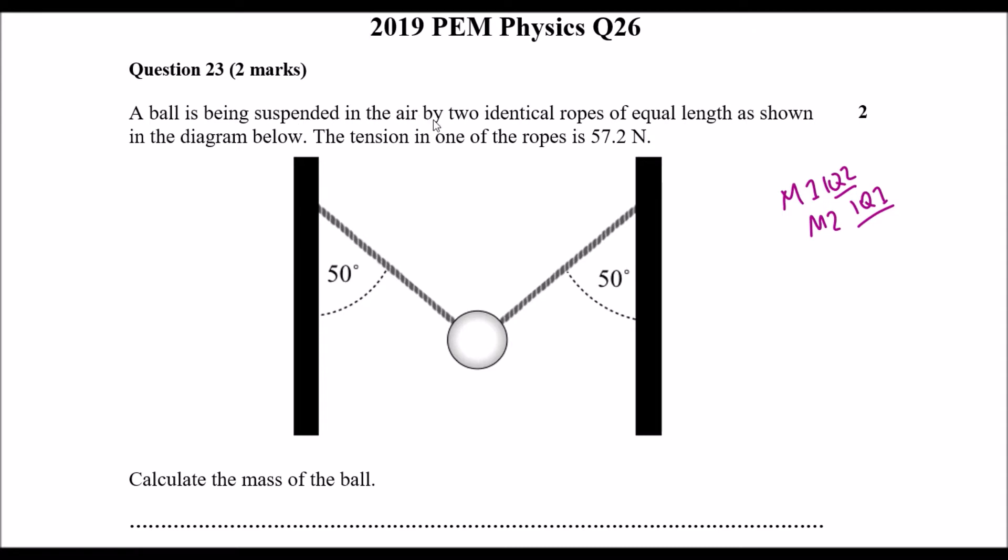It says we have a ball suspended in the air by two identical ropes of equal length as shown in the diagram below. The tension in the ropes is 57.2 N. So 57.2 here, 57.2 here. It says calculate the mass of the ball. So we want to know what the mass of this ball is.